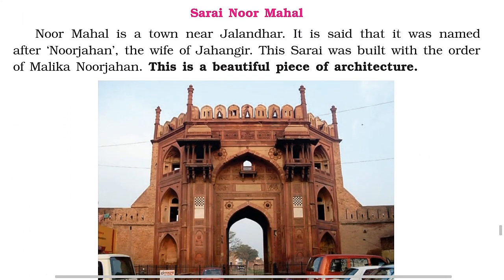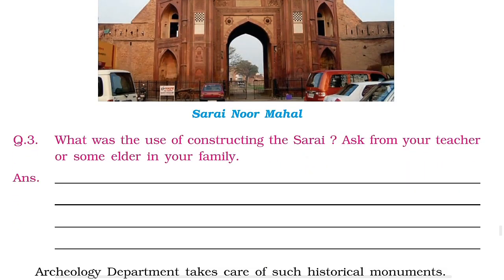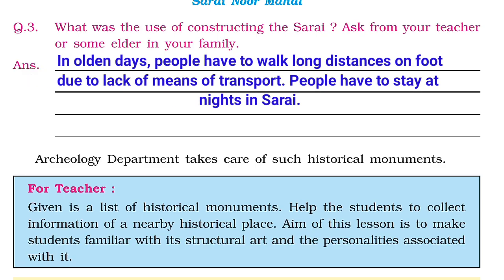Sarai Noor Mahal: Noor Mahal is a town near Jalandhar. It is said that it was named after Noor Jahan, the wife of Jahangir. This Sarai was built with the order of Malika Noor Jahan and is a beautiful piece of architecture. What was the use of constructing the Sarai? In olden days, people had to walk long distances on foot due to lack of means of transport, so people had to stay at night in Sarais.